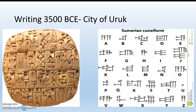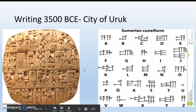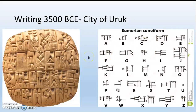We've got the first writing, called cuneiform — C-U-N-E-I-F-O-R-M. This is a cuneiform tablet: a heated-up clay that they've carved symbols into that represent letters and words. This is a loose translation of cuneiform letters into Phoenician letters, which is what we use — A, B, C, D. Cuneiform was invented in 3500 BCE in the city of Uruk.